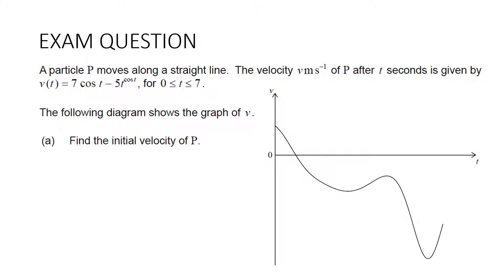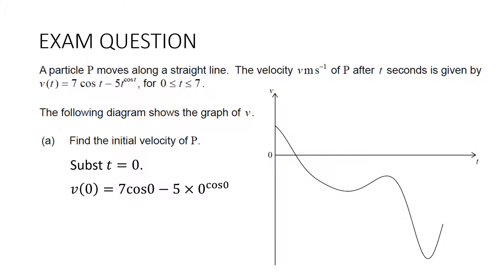Past exam question: a particle P moves along a straight line. Velocity v meters per second after t seconds is given by v(t) equals 7 cos t minus 5t to the cos t, for 0 less than or equal to t less than or equal to 7. Find the initial velocity of P. Substitute t equals 0: 7 cos 0 minus 5 times 0 to the cos 0. The second term equals 0, cos 0 is 1, so the answer is 7 meters per second.